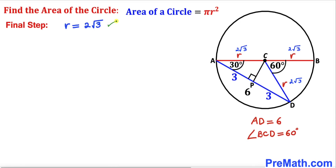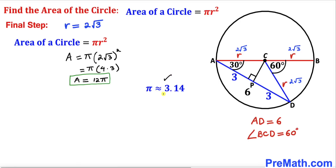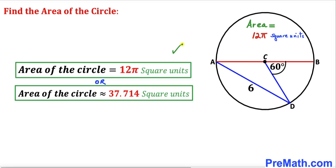Since our radius equals 2 square root of 3 units, we can now calculate the area of the circle. Using the formula pi r squared, the area equals pi times (2 square root of 3) squared, which gives us 12 pi square units. Since pi is approximately 3.14, the area is approximately 37.714 square units.